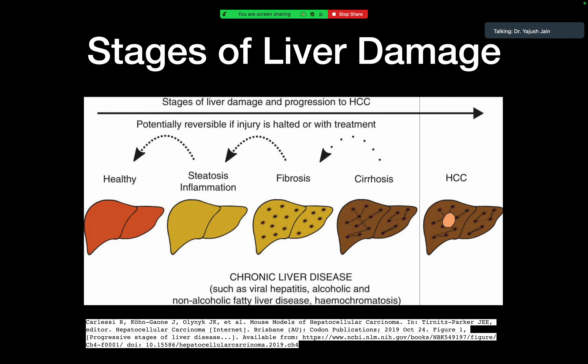Understanding the stages of liver damage: a healthy liver progresses up to HCC through repeated damage causing steatohepatitis, fat deposition, or inflammation. The next stage is fibrosis, where we can see dark spots in imaging — these are regenerative nodules. From fibrosis, the liver progresses into a cirrhotic liver, which is a germ bed for HCC formation. A lesion seen in the cirrhotic liver is most likely going to be an HCC.